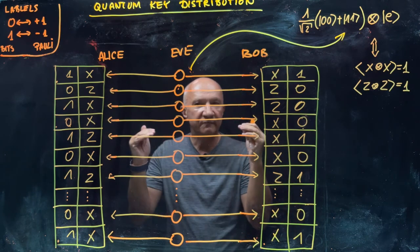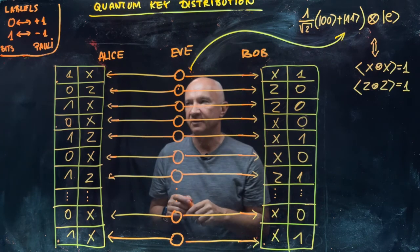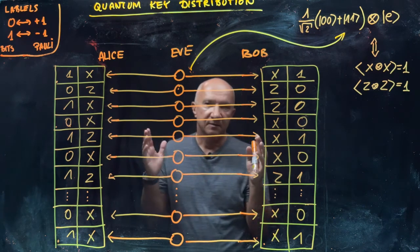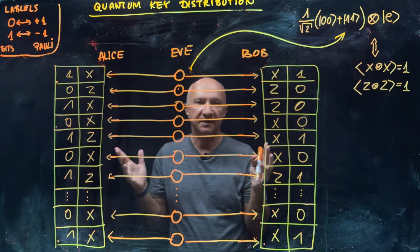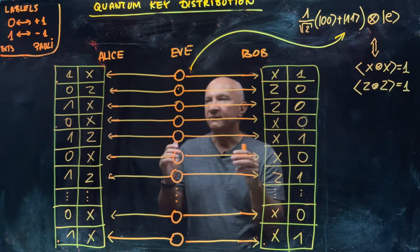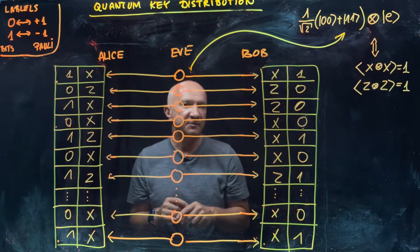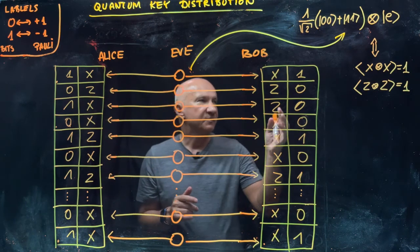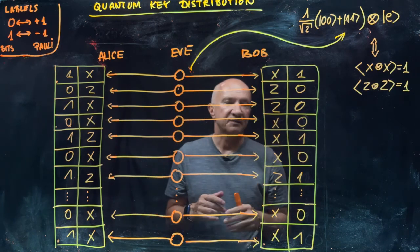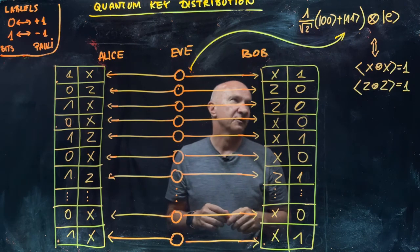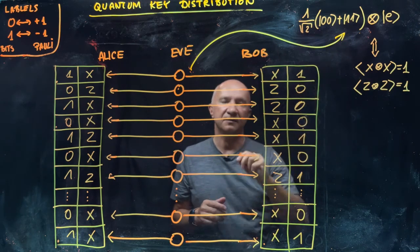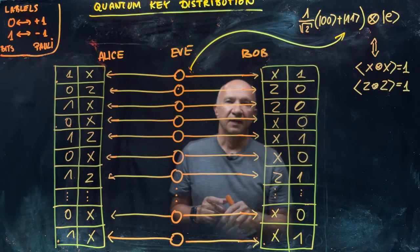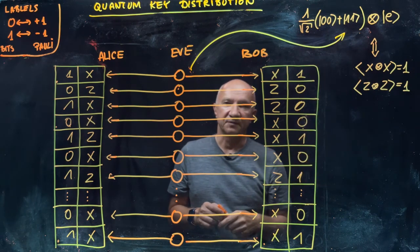They know that if both of them choose to measure their qubits in the Z basis, they should get perfectly correlated, identical outcomes. And if both of them choose to measure in the X basis, likewise they should get identical outcomes. If they indeed observe this kind of correlations, they know that the only state that can generate those correlations is this particular state. Any other state will give you different statistics.